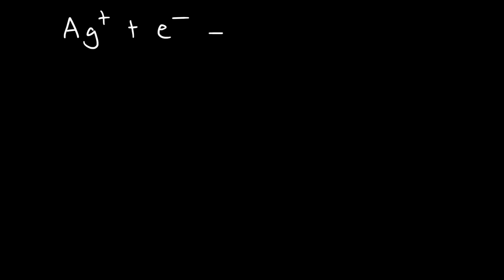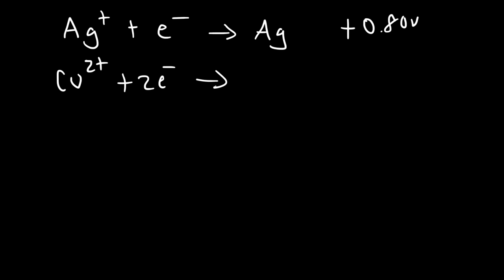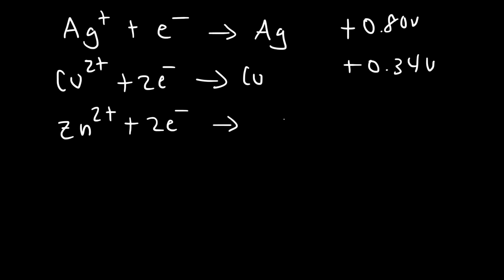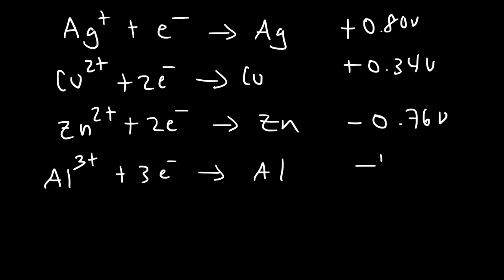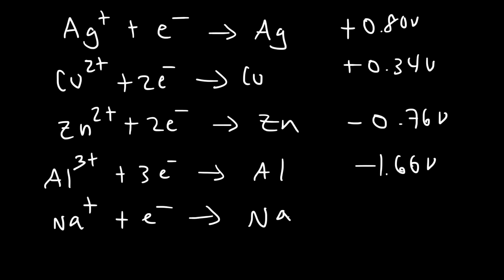Let me write a few reduction reactions. The silver cation acquires one electron to turn into Ag, with a cell potential of positive 0.80 volts. The copper 2+ ion acquires two electrons with a cell potential of positive 0.34 volts. For zinc the cell potential is negative 0.76 volts, for aluminum it is negative 1.66 volts, and for sodium it is negative 2.76 volts.